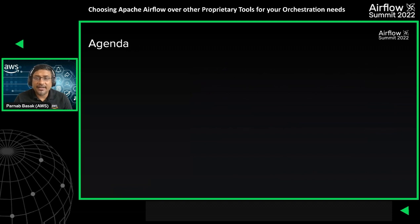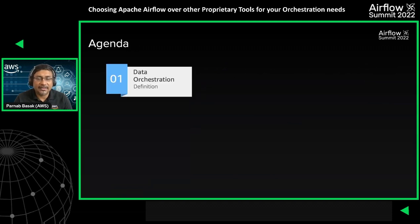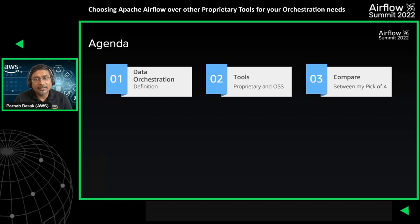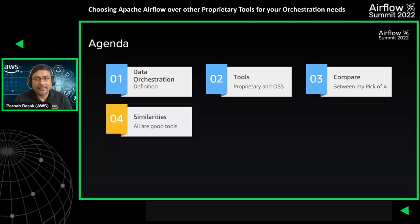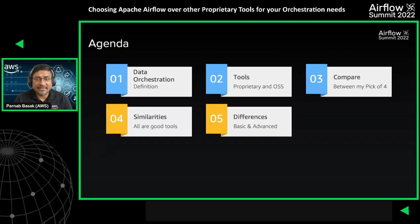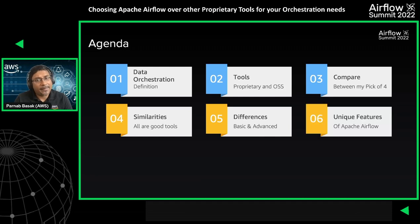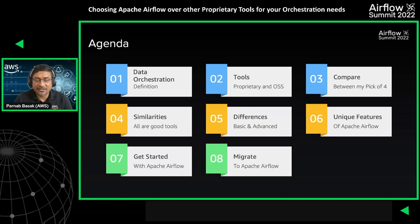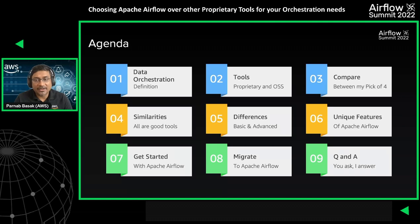I have a packed agenda today. I'll talk briefly on what data orchestration is, what tools are available in the market today — and trust me, there are many. I pick four among them including Apache Airflow for comparison. I contrast similarities categorized as basic and advanced features, and some unique features of Apache Airflow. I'll conclude with getting started and migration guides.